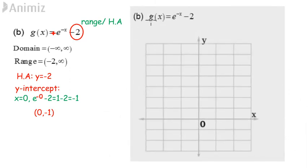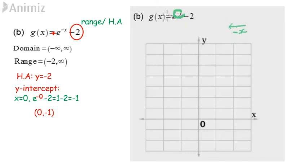We have negative x, which means the graph moves to the left-hand side. We have negative y, so the graph goes up. Therefore, the graph travels towards the second quadrant.